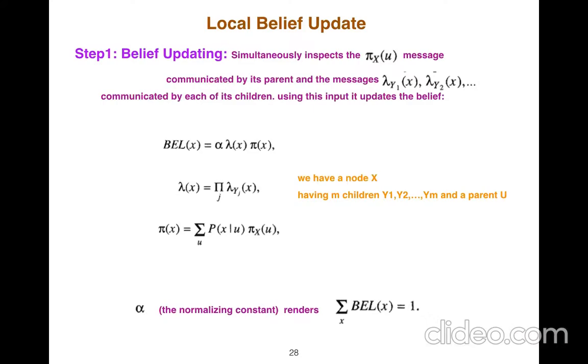The algorithm, step one is just updating, belief updating simultaneously. It inspects the pi messages communicated by its parents and lambda messages communicated by each of its children.